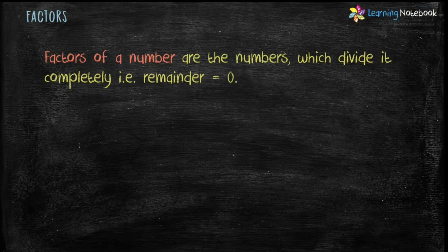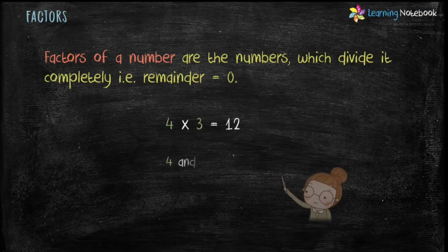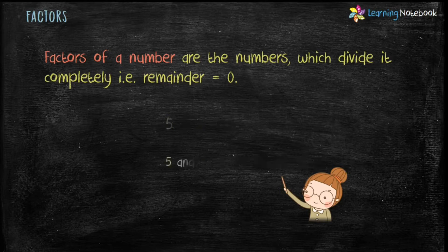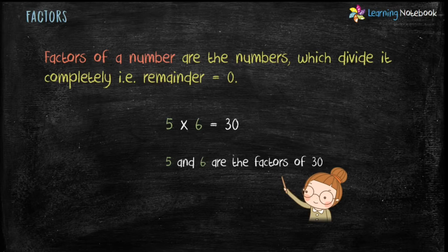Factors of a number are the numbers which divide it completely, that is remainder equals to 0. Let's take an example: 4 × 3 = 12. Here 4 as well as 3 divide 12 completely, therefore 4 and 3 are the factors of 12. Let's take another example: 5 × 6 = 30. Here 5 as well as 6 divide 30 completely, therefore 5 and 6 are factors of 30.